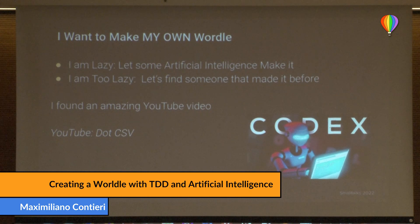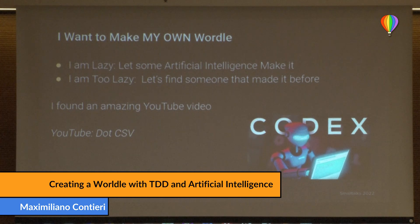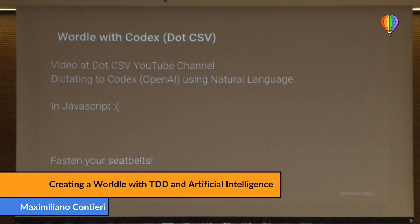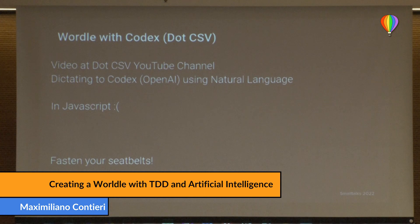I had some FOMO and wanted to do my own Wordle. After trying to get some artificial intelligence to do it, I found someone who had done it before me and decided to watch how he did it instead. I found a popular artificial intelligence YouTube channel called .csv. He made a step-by-step Wordle creation just by dictating instructions in natural language, and the Wordle programs itself.